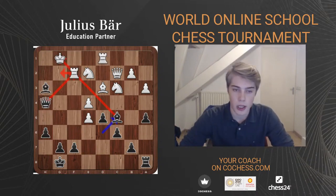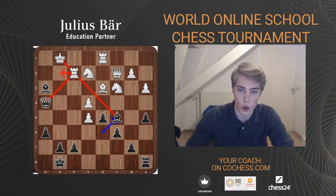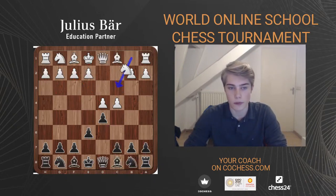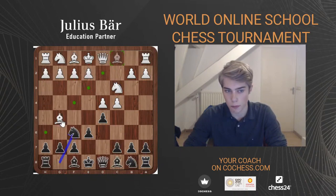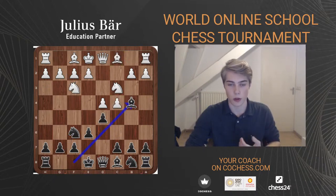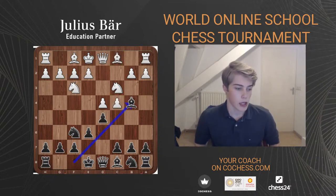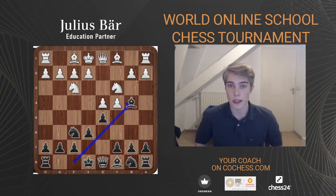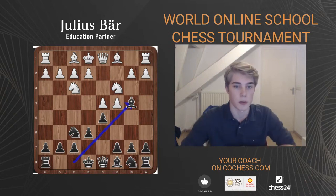Do you have the Ragozin in store? The Ragozin is an interesting opening. For those who don't know, it arises from 1.d4 Nf6, c4, e6 — usually White plays c4, d5, but if White goes Nf3, Black has Bb4 which is the Ragozin. There might be a session on the Ragozin on Co-Chess, but it's not up to me to decide what gets streamed.